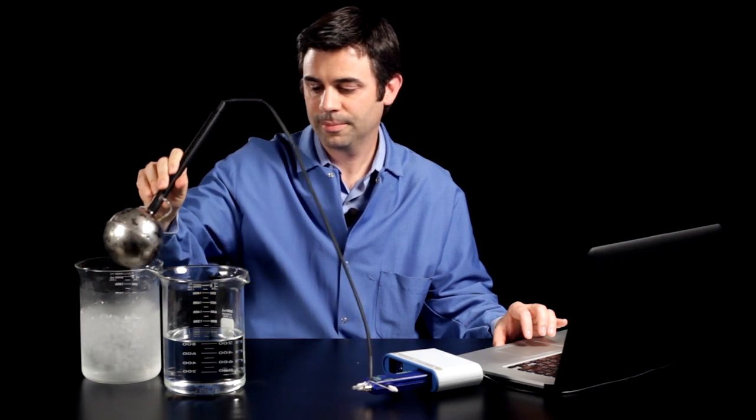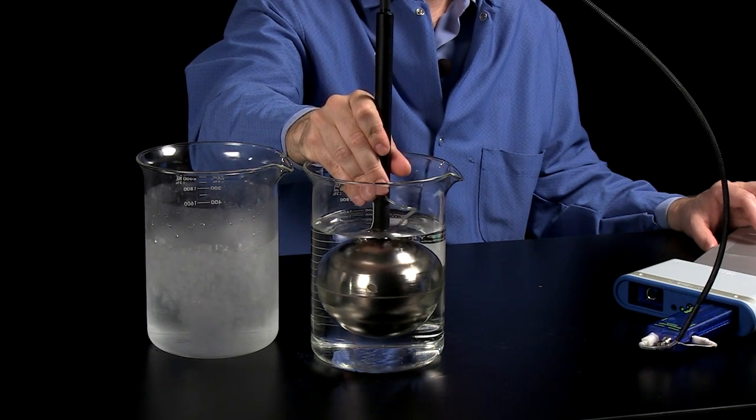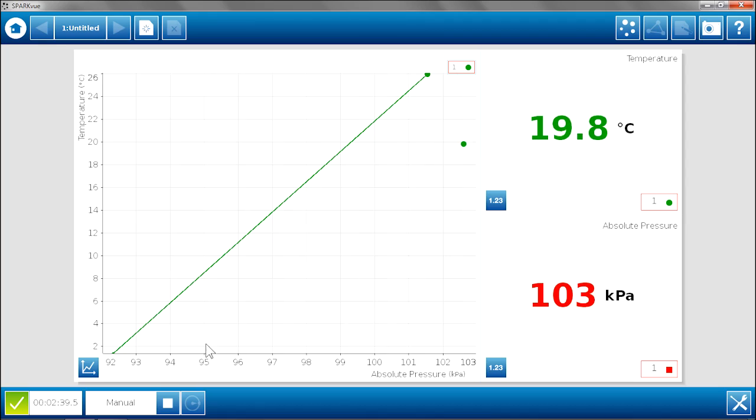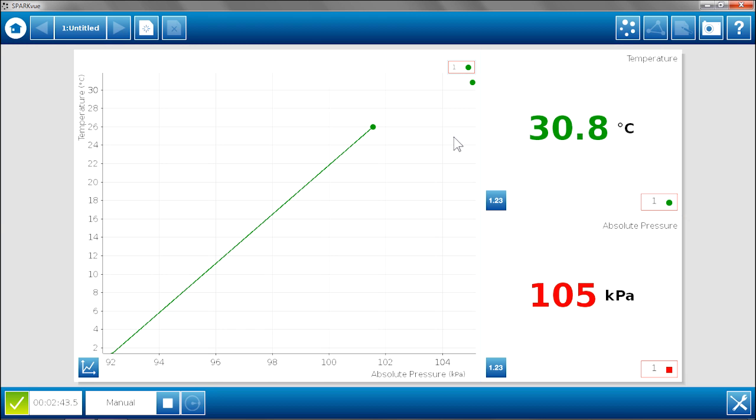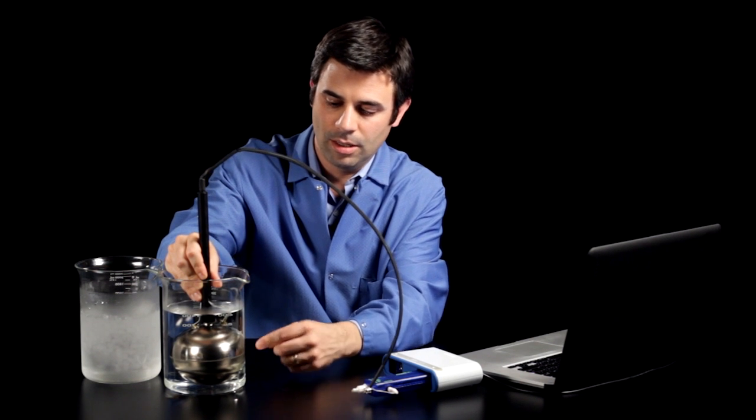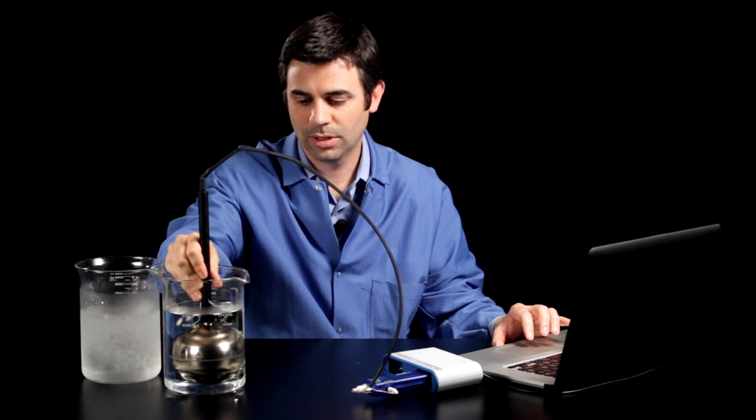Now I am going to put this into the warm bath. Again, I want to make sure this is completely submerged. And we can see the point on the graph rapidly rising as the temperature and pressure inside the sphere attempt to equilibrate with the warm water.